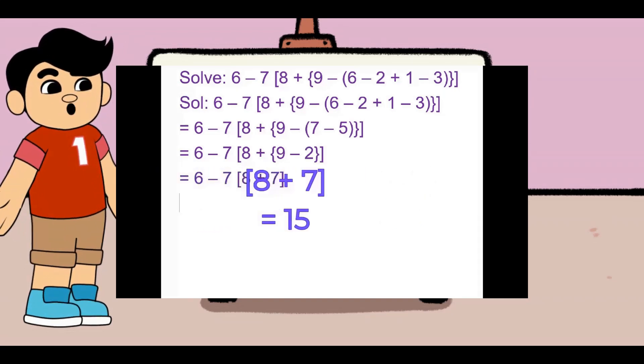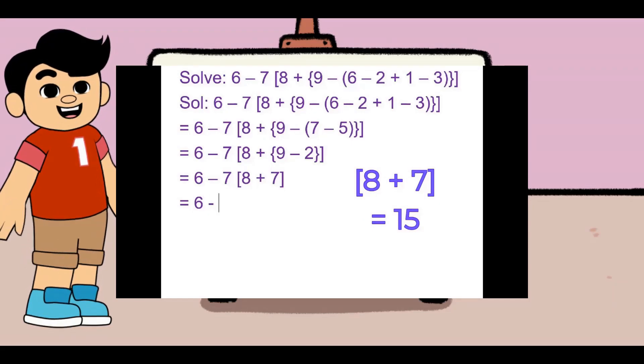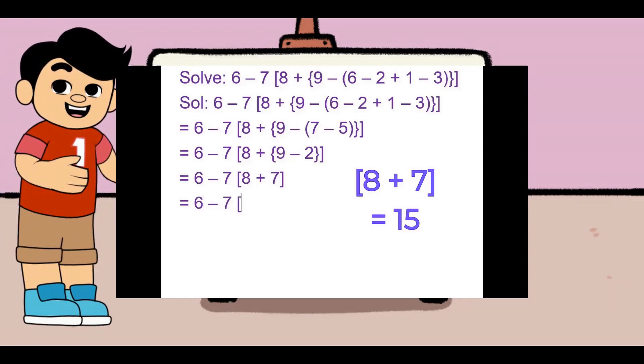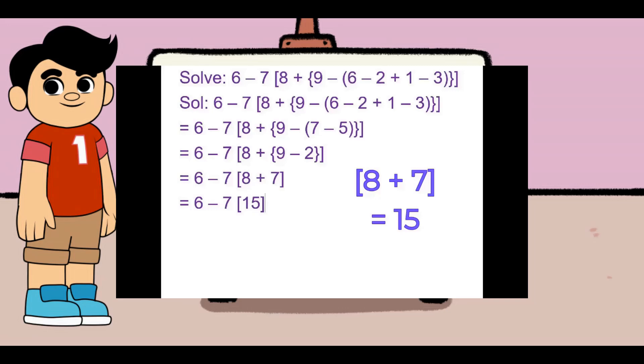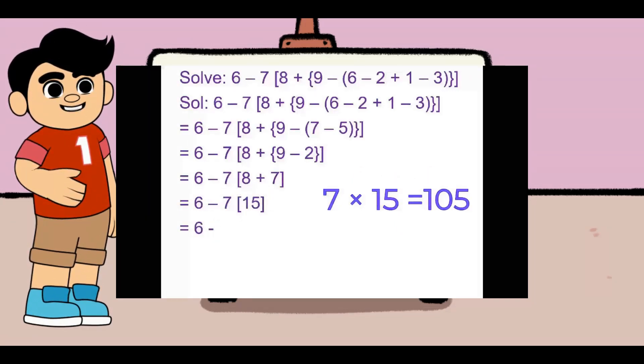According to BADMA's rule, now we have to solve the big bracket. In big brackets, the sum of the positive numbers 8 and 7 is 15. Multiplying 7 by 15 gives 105.